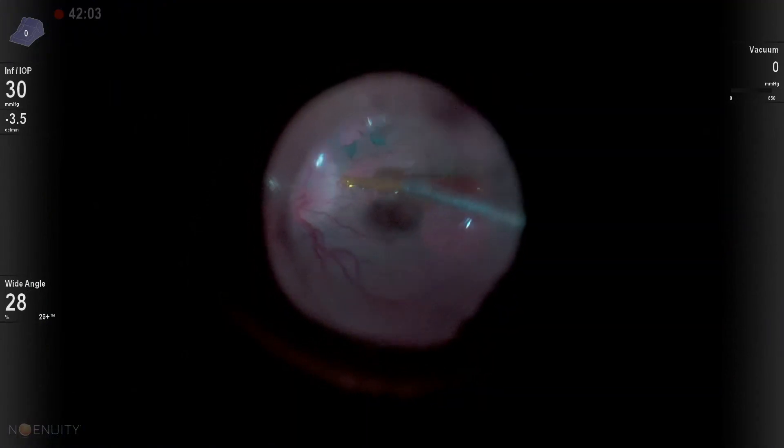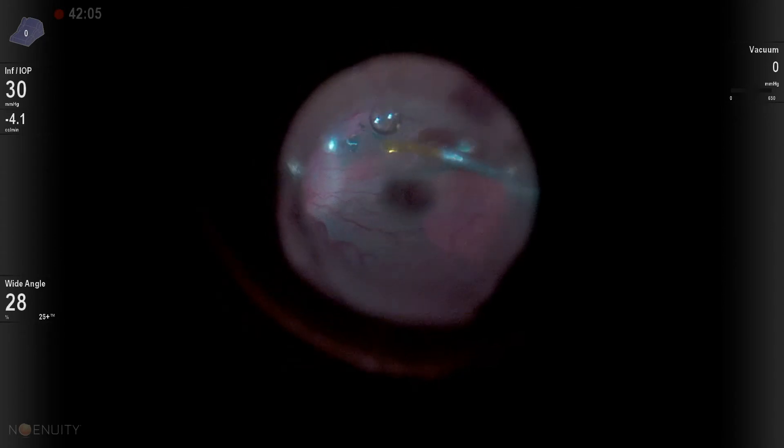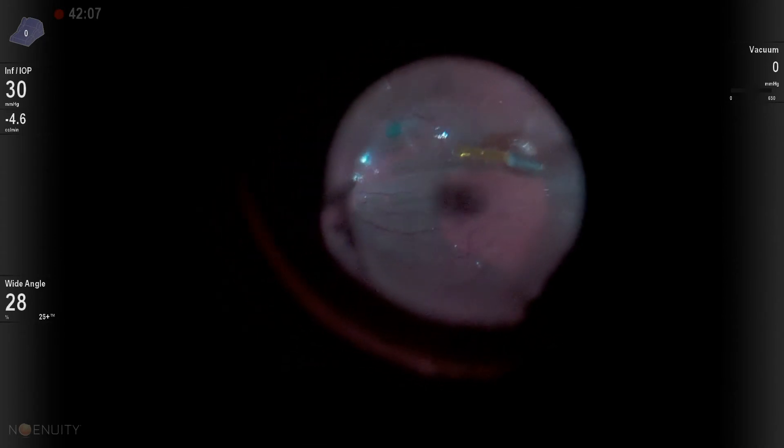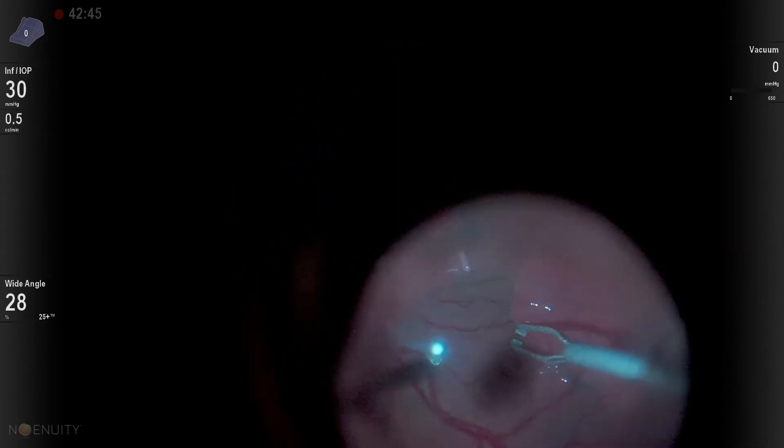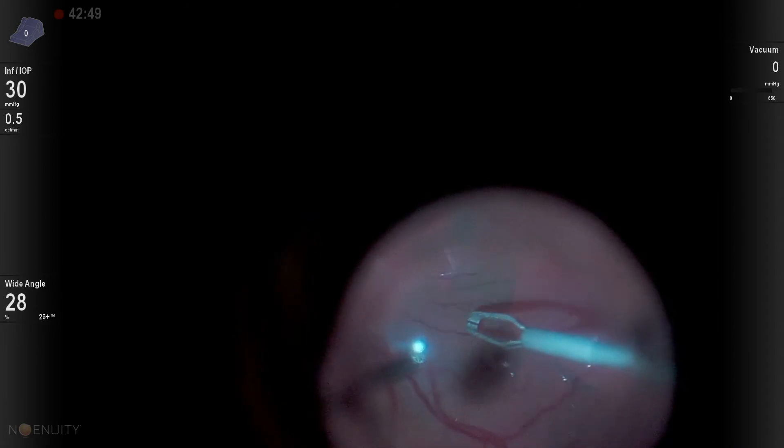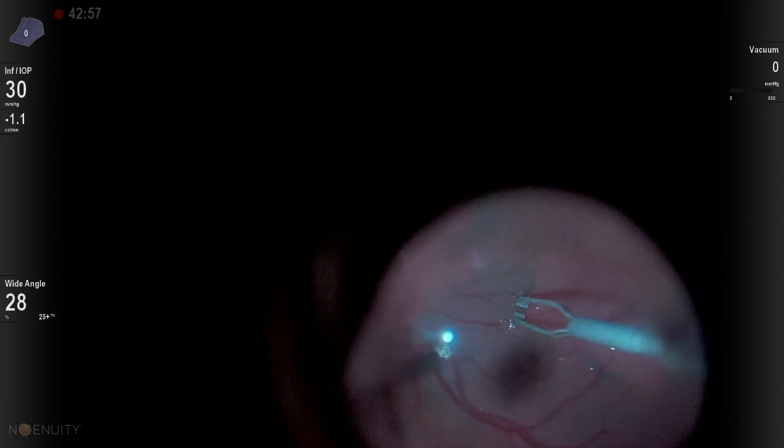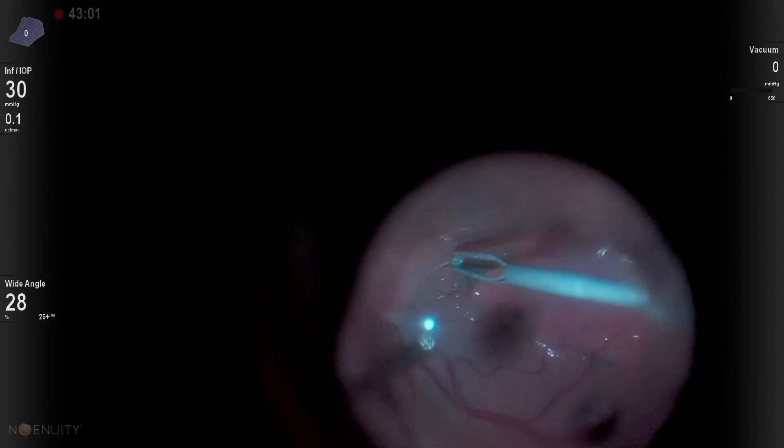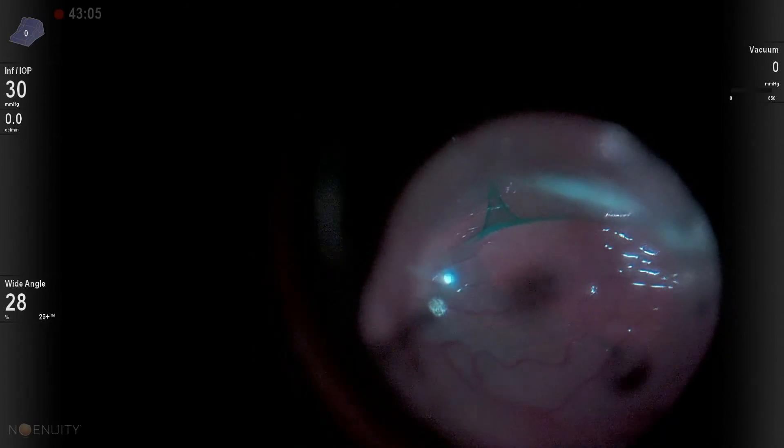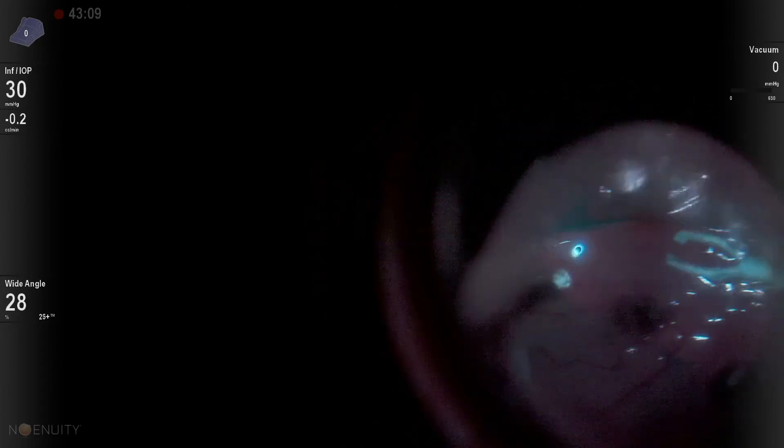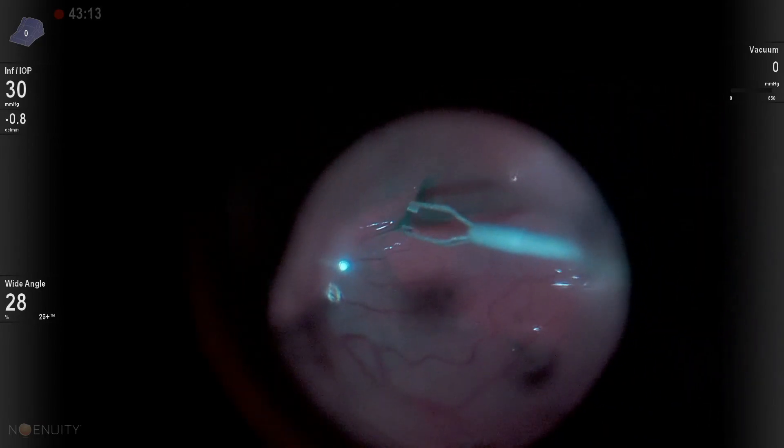I'm going to put in the PFO. And this will give me a really good, stable surface to finish my peeling. And I've found that I really do love peeling under PFO. The key to successful peeling under PFO is it's almost like a Rhexis where you fold the ILM back on top of itself.